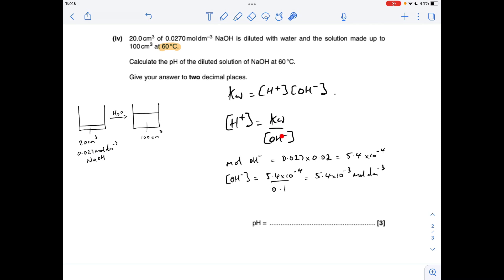So we just need to plug those numbers into here now. Minus log and we'll get the pH. So the H plus concentration comes out at 1.72 times 10 to the minus 11. Obviously that's moles per decimetre cubed there. And the pH is therefore minus log of that. 10.76 to 2 decimal places.